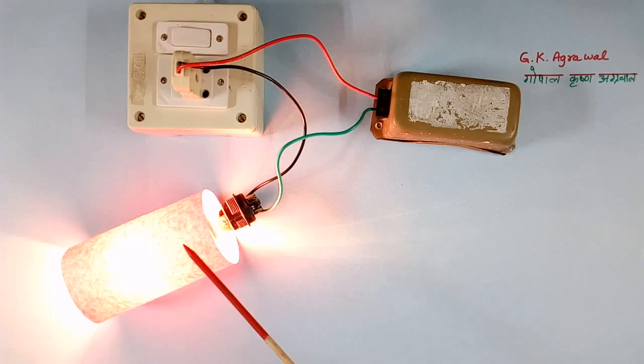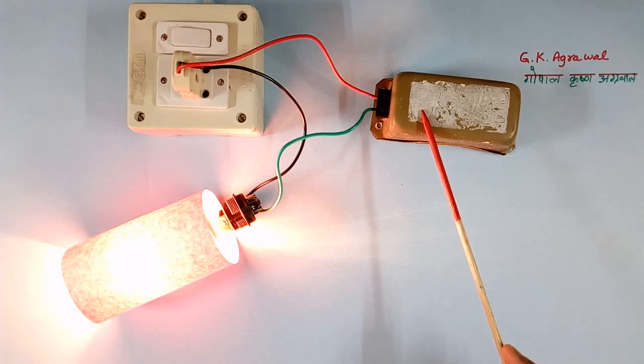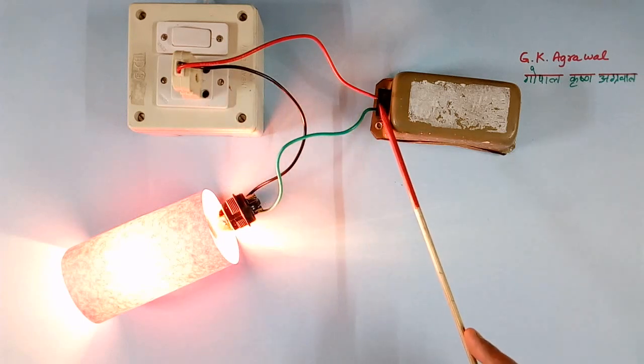Now I will switch on this incomer supply. So bulb has become on, even if inductor is connected in series. Now we will measure the voltage of incomer, choke, and load using a multimeter.